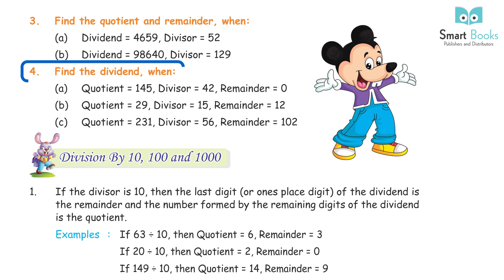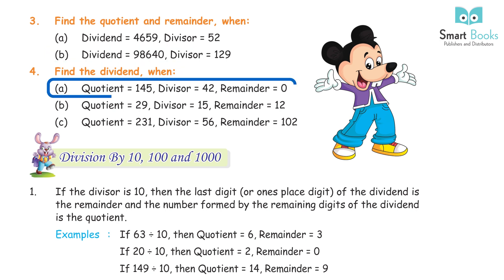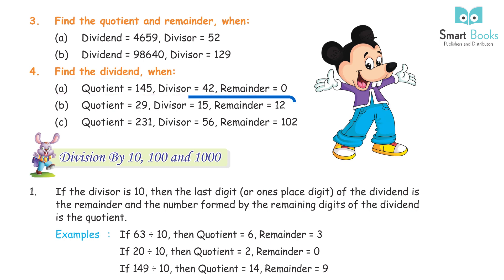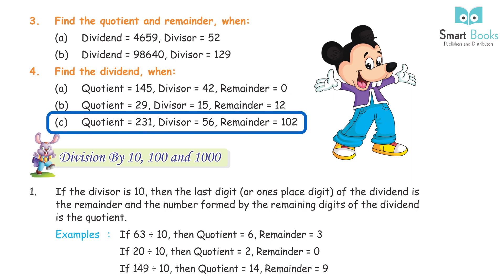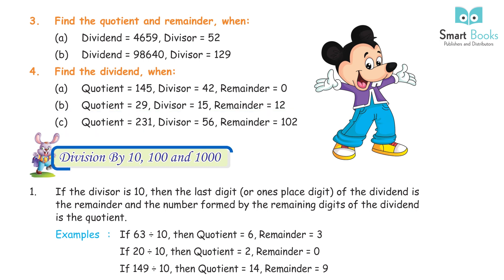Exercise 6.2 Question 3 — find the dividend: a) quotient 145, divisor 42, remainder 0 → answer 6090; b) quotient 29, divisor 15, remainder 12 → answer 447; c) quotient 231, divisor 56, remainder 102 → answer 12,938.